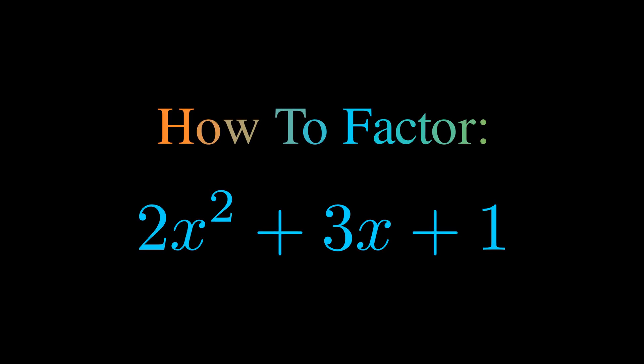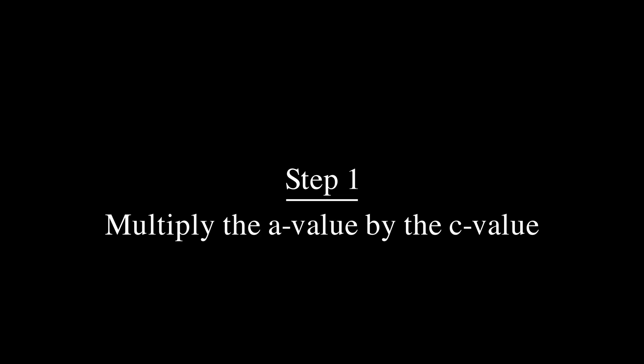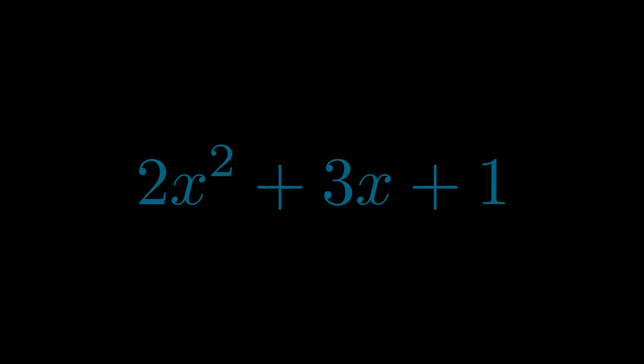In this video we're going to learn how to factor this equation. Step one when factoring an equation of this form is to multiply the a value by the c value. Here we can see that our a value is the coefficient on the x squared term and our c value is the constant term. When we multiply these two values we get this value here in magenta.